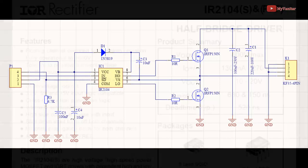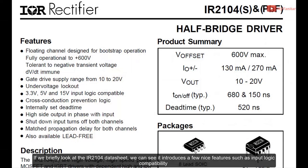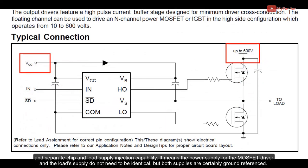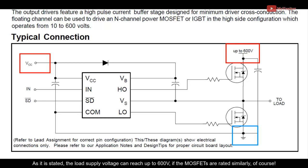If we briefly look at the IR2104 datasheet, we can see it introduces a few nice features such as input logic compatibility and separate chip and load supply injection capability. It means the power supply for the MOSFET driver and the load supply do not need to be identical, but both supplies are certainly ground referenced. As stated, the load supply voltage can reach up to 600 volts if the MOSFETs are rated similarly.